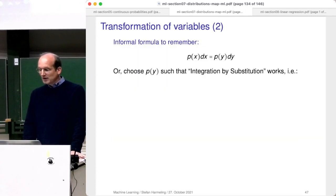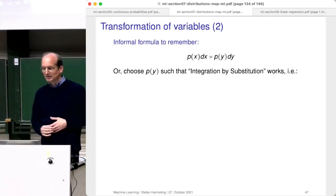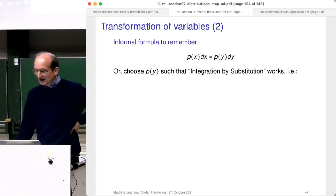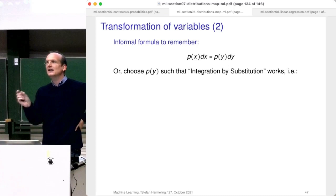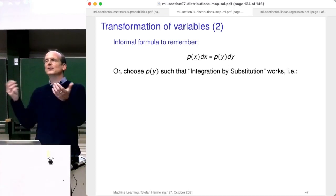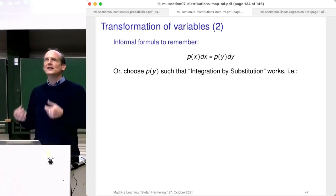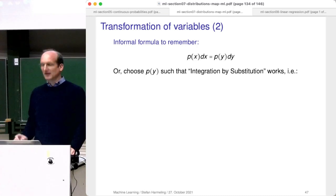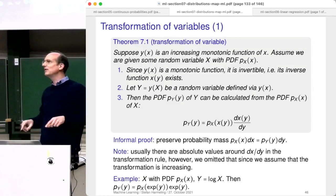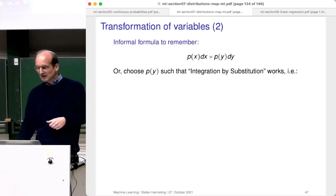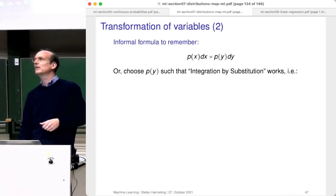The informal formula to remember: p of x times dx equals p of y times dy. When you memorize that, this is about two areas staying the same — the dx is just a little line segment. From this you can always derive back the correct formula. This is a useful way of memorizing it, and it also explains where the absolute values come from.